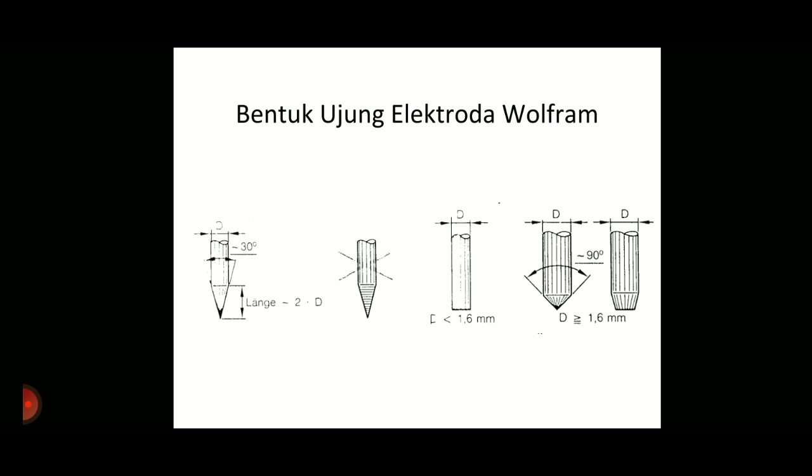Kalau untuk ngelas baja karbon menggunakan elektroda EWTH yang ada thoriumnya 1 atau 2 persen, kodenya warnanya merah. Ujungnya itu ada warna merah sedikit, itu kode. Kalau yang murni warnanya hijau - EWP, elektroda wolfram pure, murni, warnanya hijau. Nanti untuk ngelas khusus aluminium. Ini ujungnya nanti sebelum digunakan untuk melakukan pengelasan itu dilancip dulu kalau yang untuk ngelas baja karbon. Kalau untuk ngelas aluminium ujungnya tumpul, bahkan dibentuk seperti setengah bola.